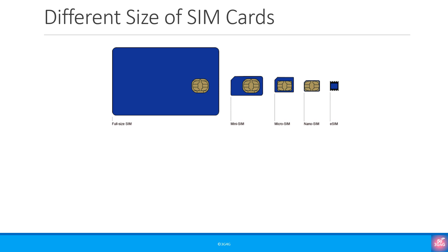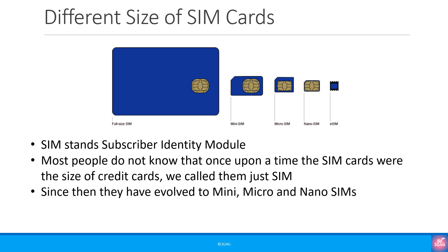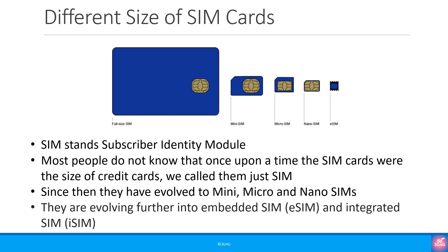There are different types of SIM cards as you can see in this picture. SIM stands for Subscriber Identity Module. Most people do not know that once upon a time SIM cards were the size of credit cards — we called them just SIM. Since then they have evolved to mini, micro and nano SIMs, and are evolving further into embedded SIM or eSIM and integrated SIM or iSIM.